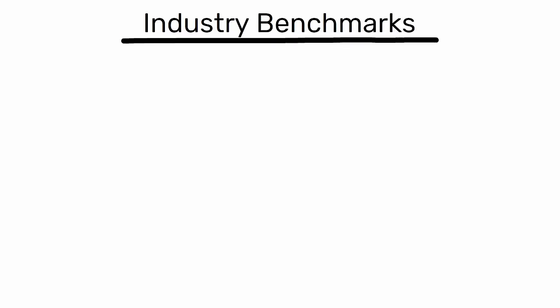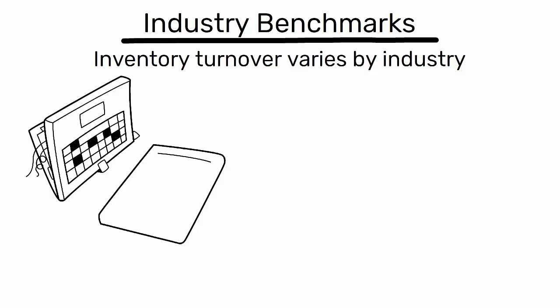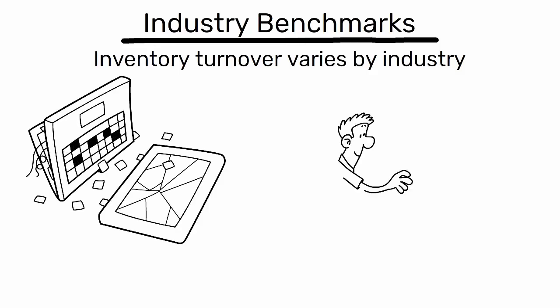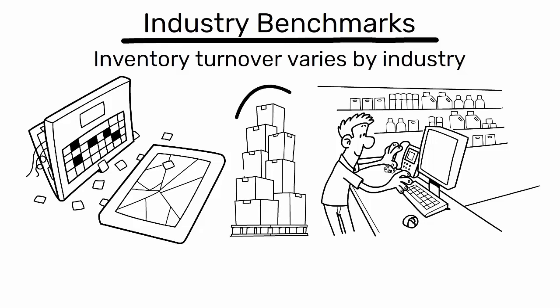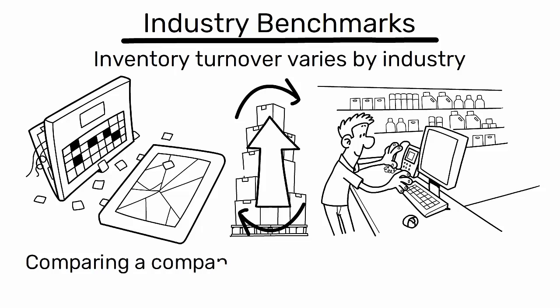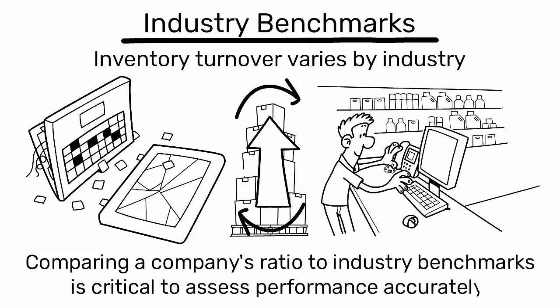Inventory turnover varies by industry. For example, sectors like perishable goods or fast-moving consumer products generally have higher turnover compared to industries with longer product life cycles. Comparing a company's ratio to industry benchmarks is critical to assess performance accurately.